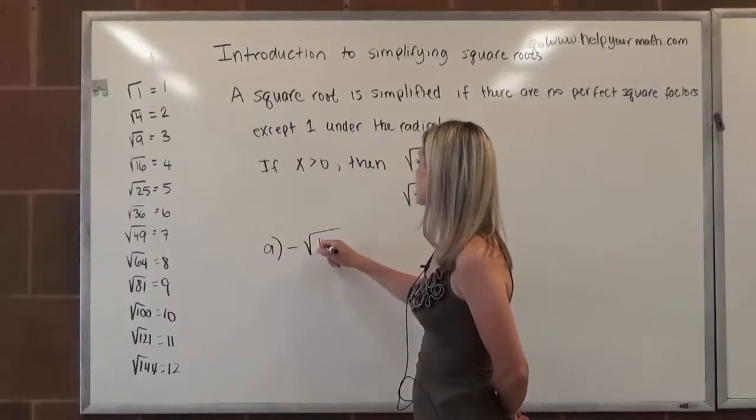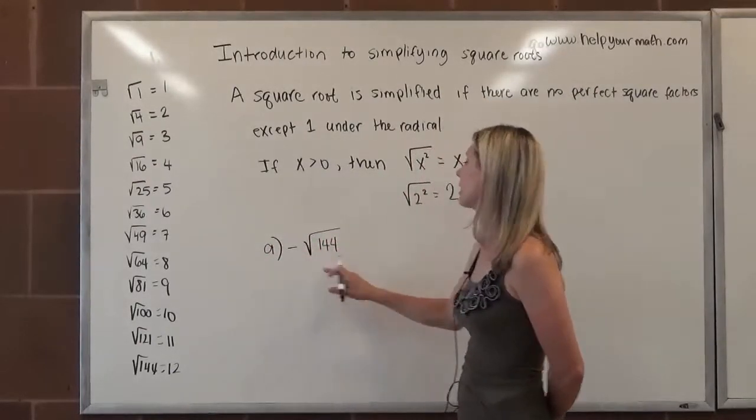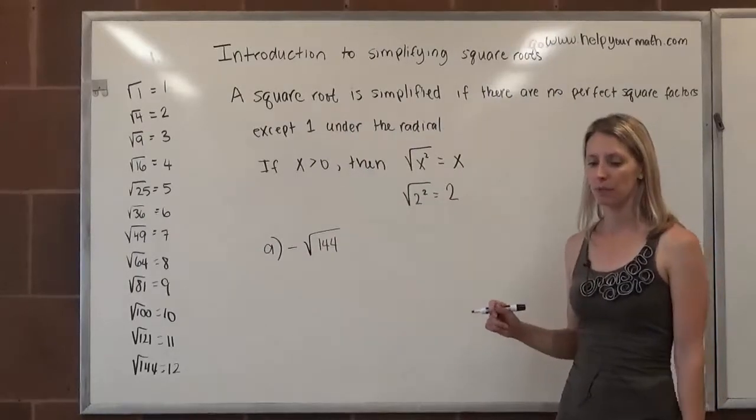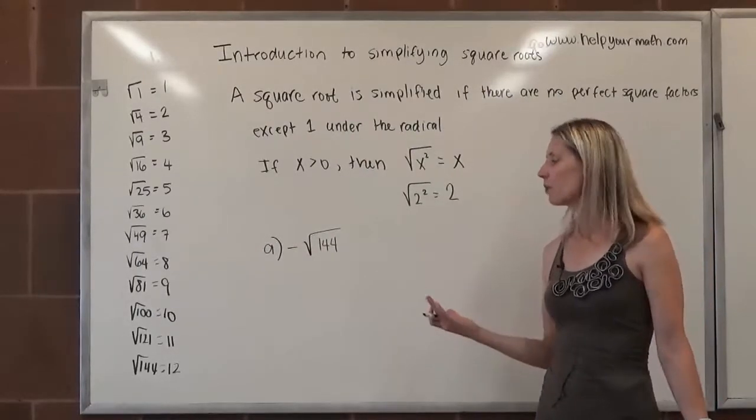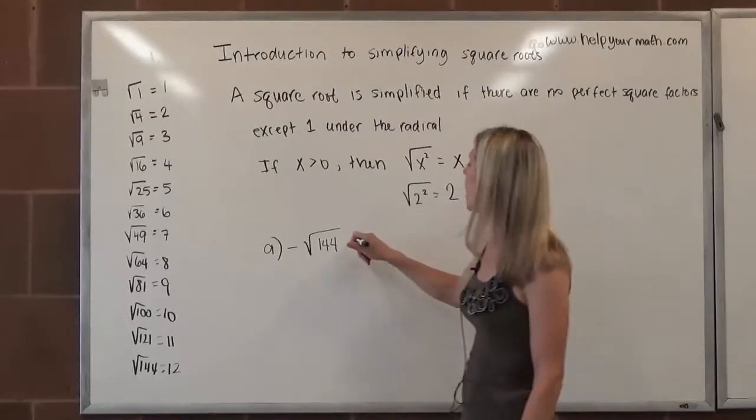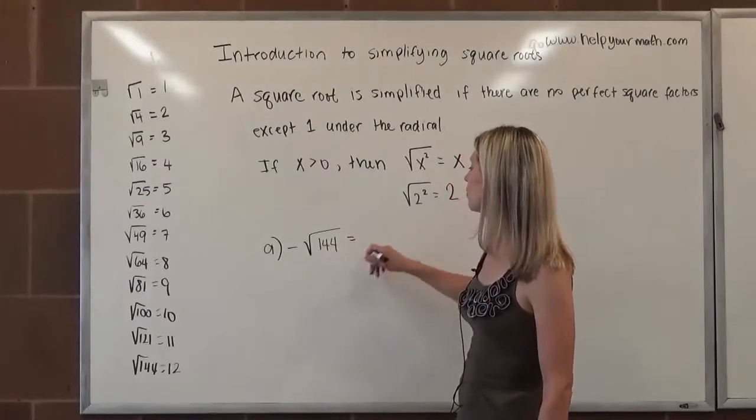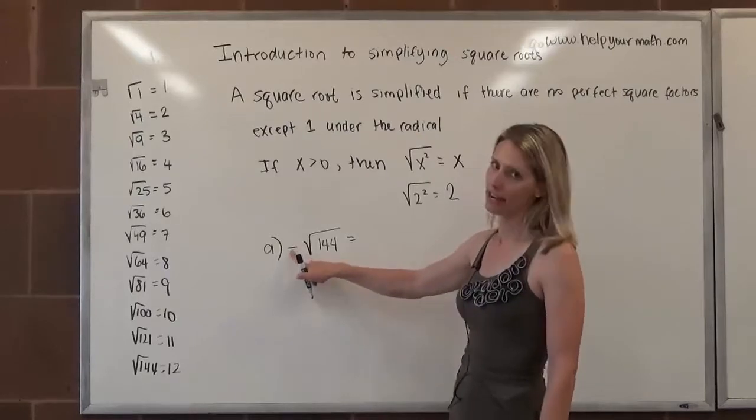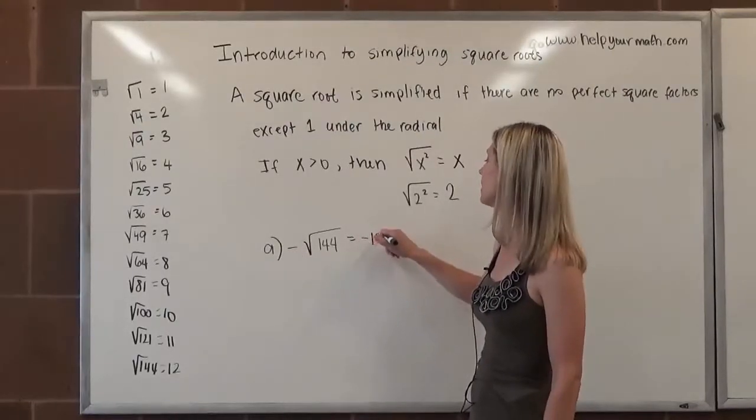First we're going to look at simplifying the negative square root of 144. So we want to ask ourselves, is 144 a perfect square? And the answer is surprisingly yes, yes it is. The square root of 144 is 12. We want the negative root, so we would say negative 12.